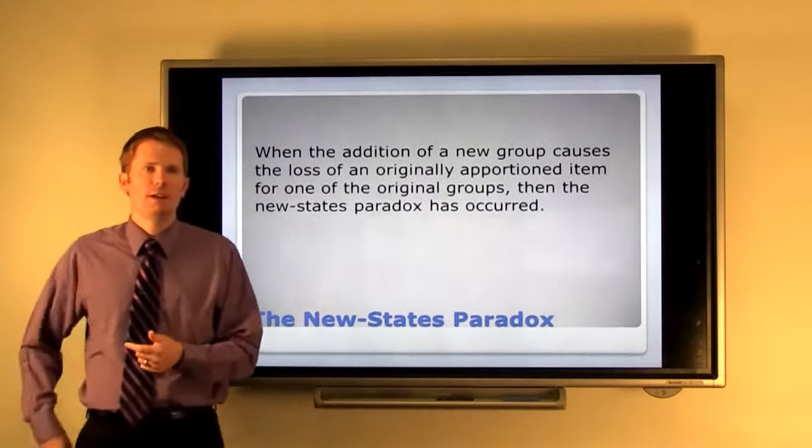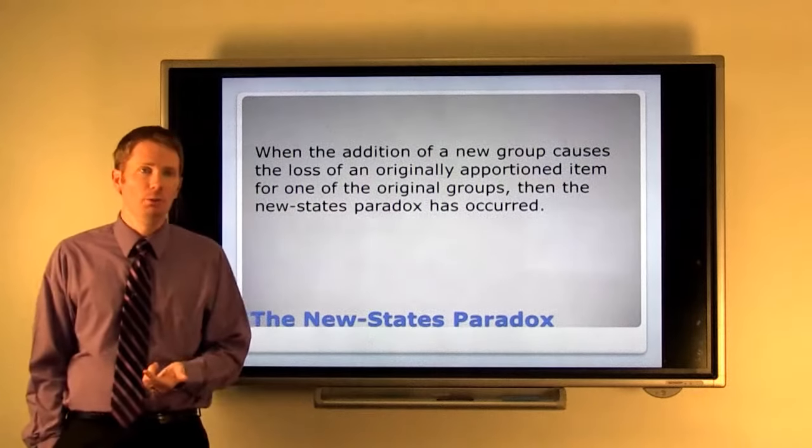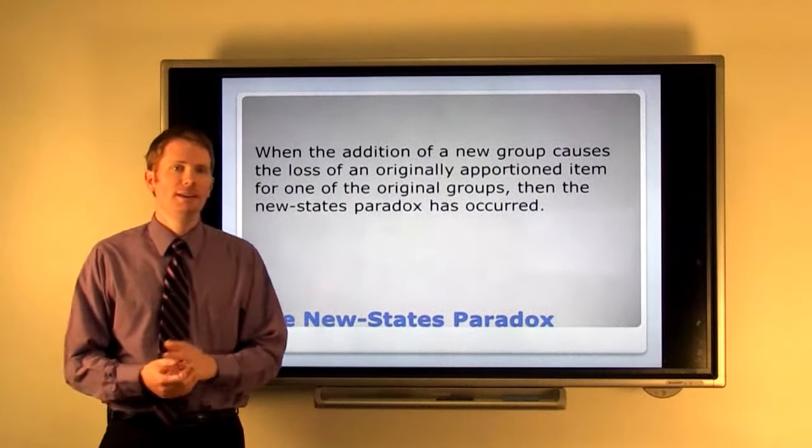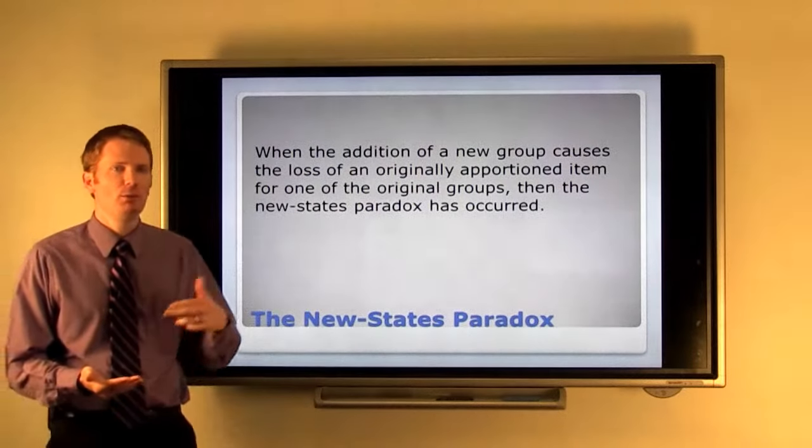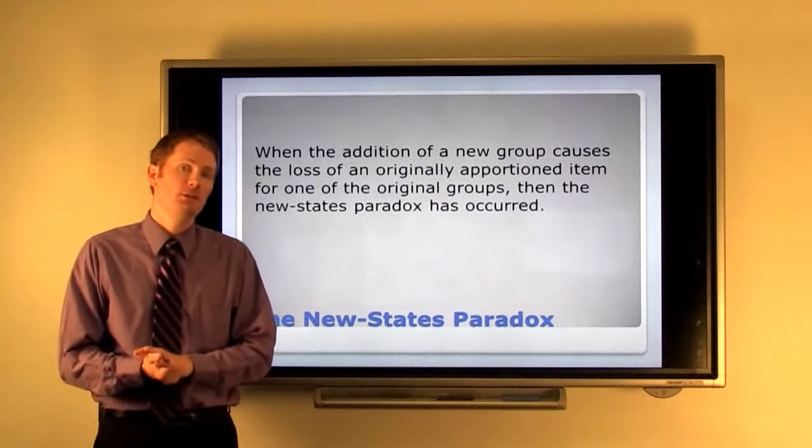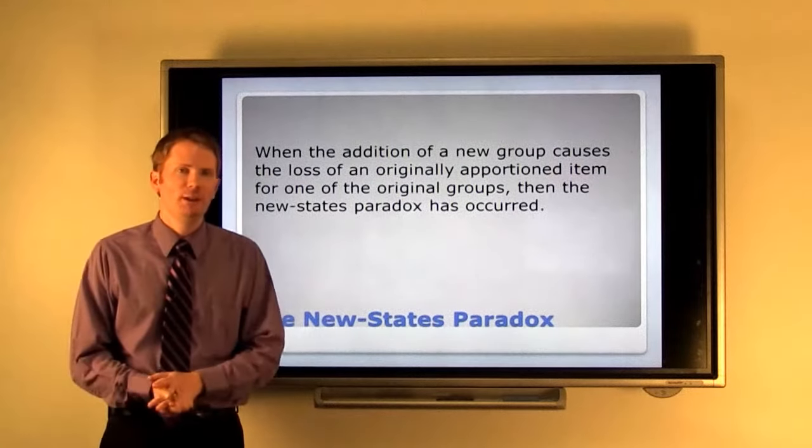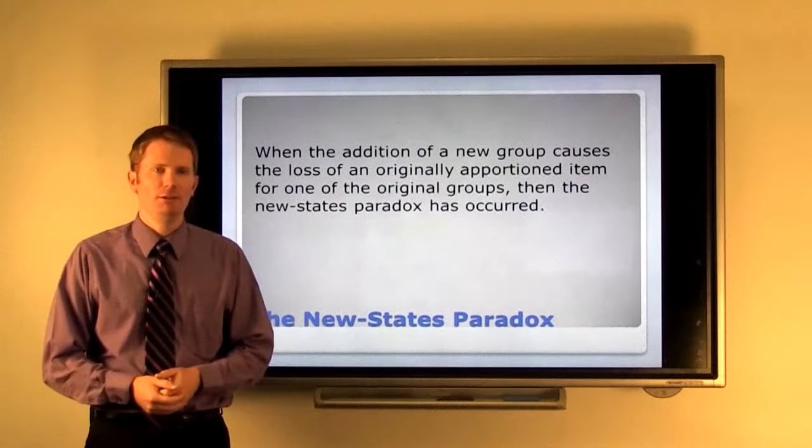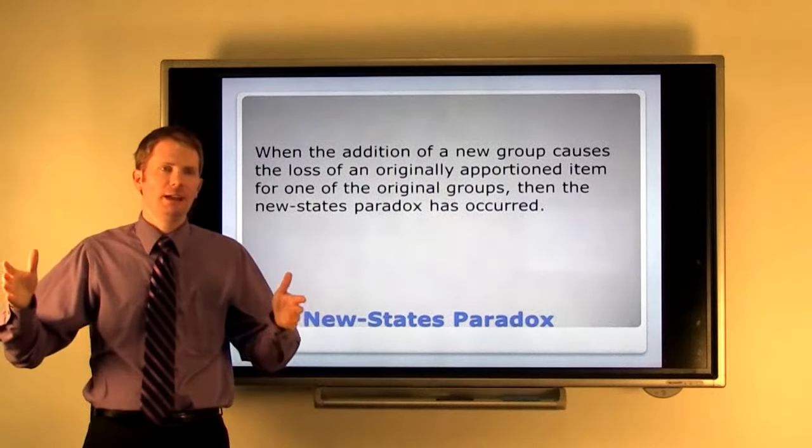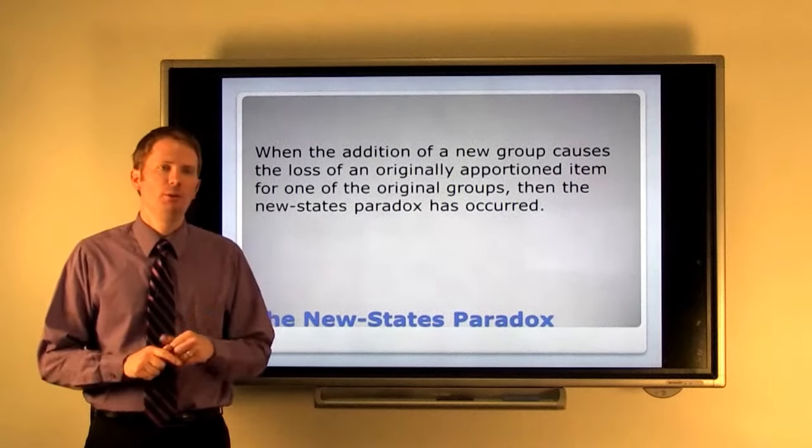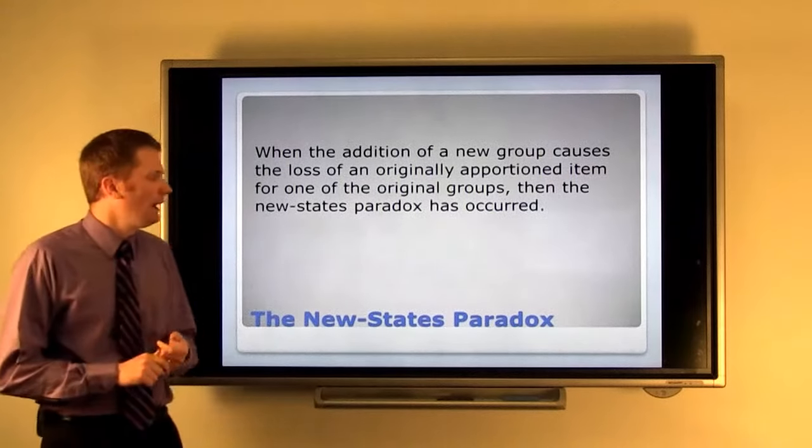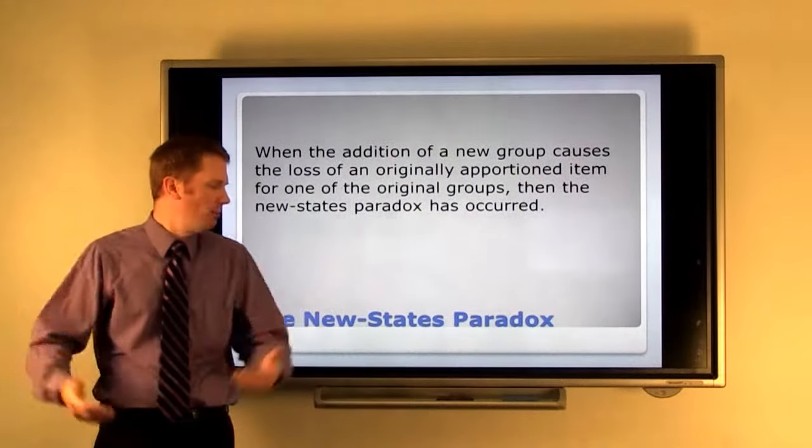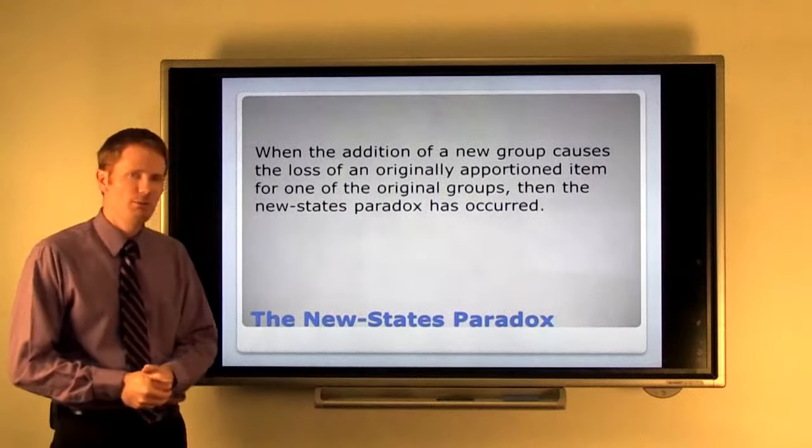And lastly, we have the new states paradox. When the addition of a new group causes the loss of an originally apportioned item for one of the original groups, that's when the new states paradox has occurred. It's called the new states paradox because it happened when we brought a new state into the Union. The state of Oklahoma in 1907 was welcomed into the United States and because of her population, she deserved five representatives in the house based on her population. But adding those extra five to the total actually would have caused a change in representation level for both the state of Maine and the state of New York. And so when this one was discovered, this was kind of the last straw for Hamilton's method. And we changed our mind as a government and Congress passed that we would be using Webster's method for a while.